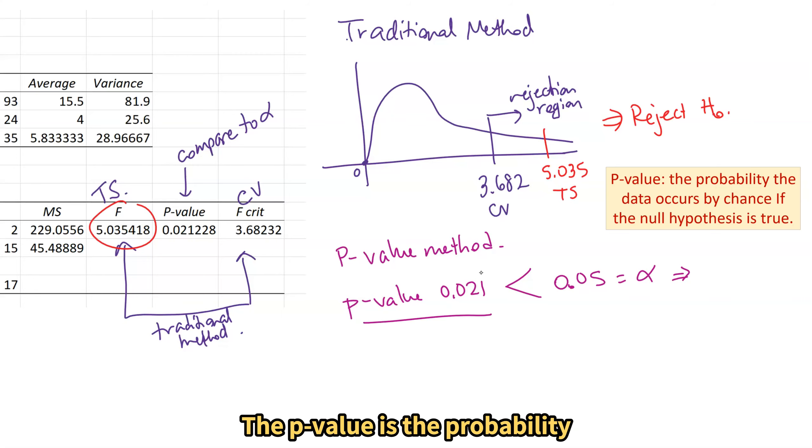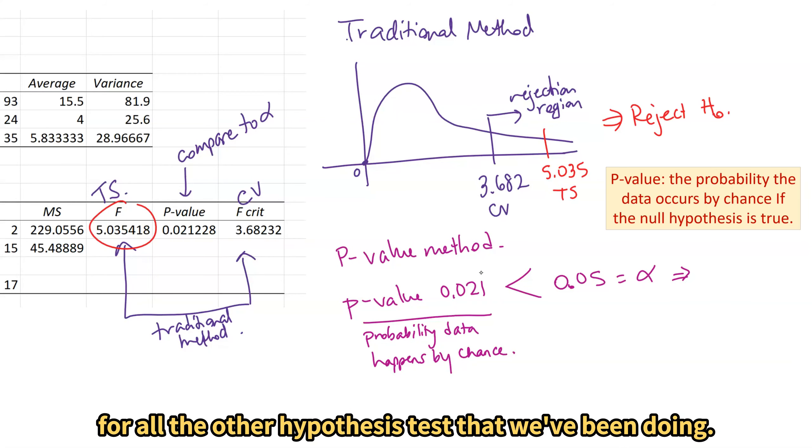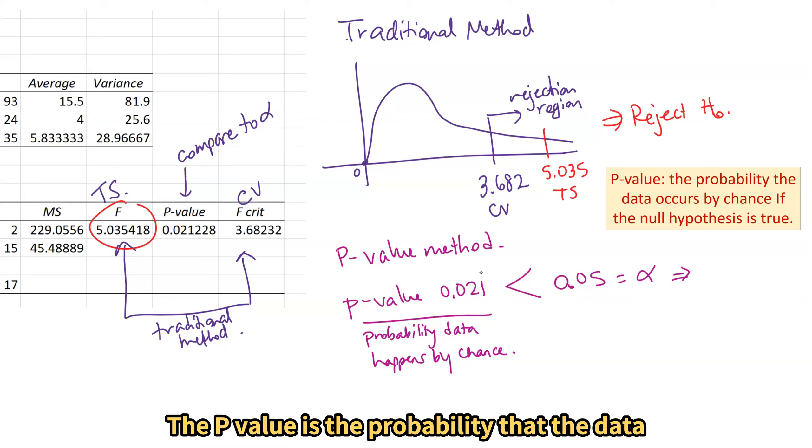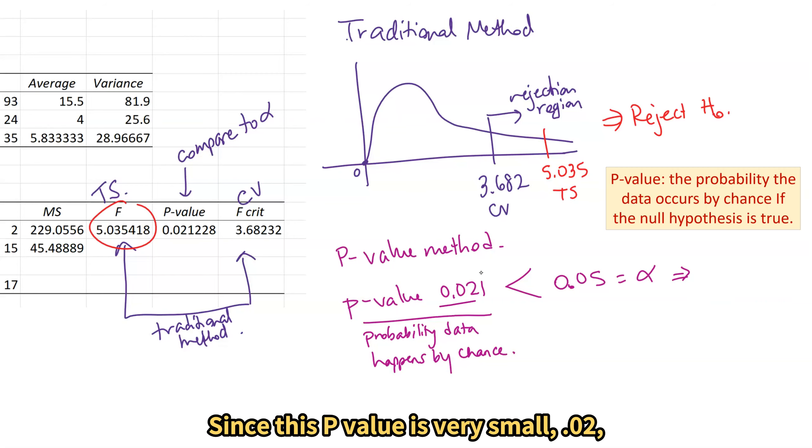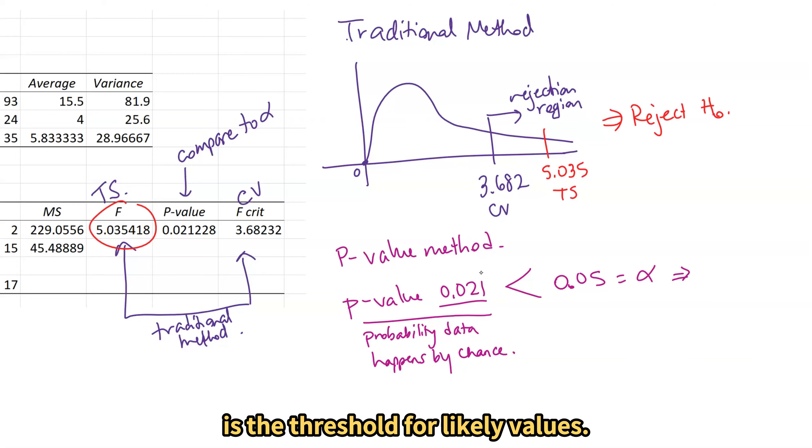The p value is the probability that this data happens by chance and this is the same as the p values for all the other hypothesis tests that we've been doing. The p value is the probability that the data we get happens by chance. Since this p value is very small, 0.02, it is smaller than our alpha and our alpha is the threshold for likely values. Since it's smaller, we would reject the null.